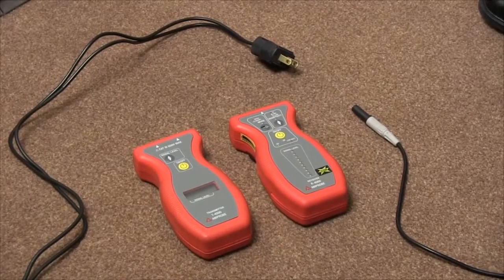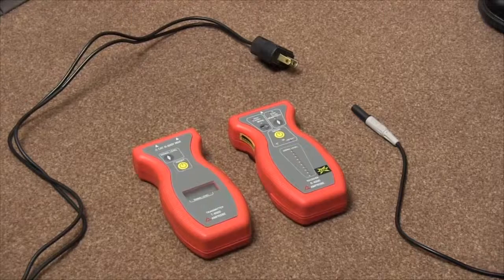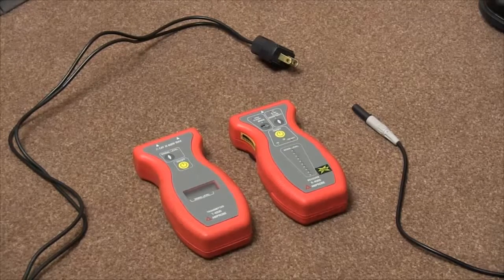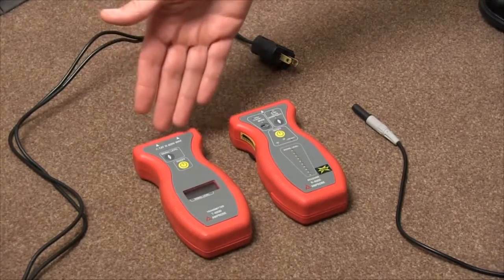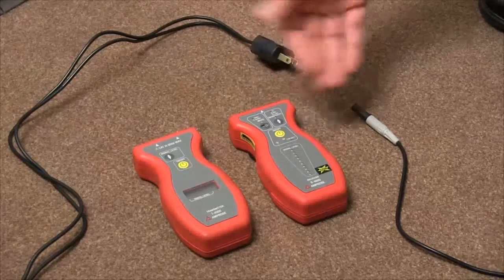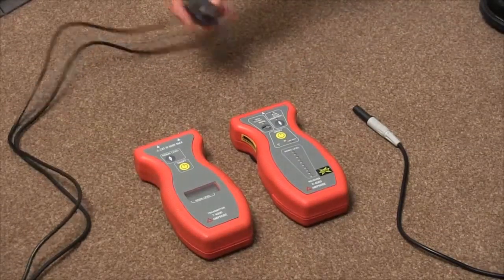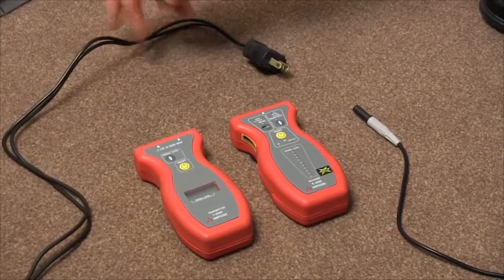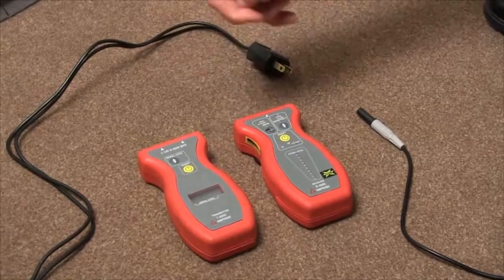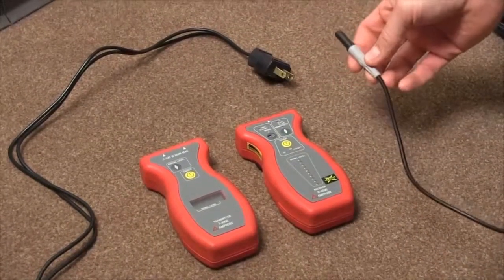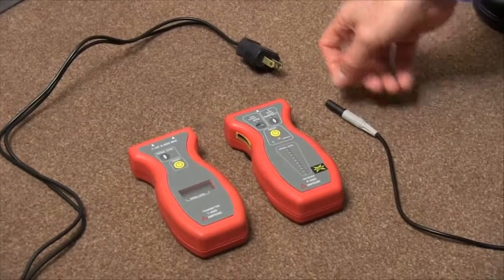Today we're talking about the Amprobe AT4000 wire tracer. This kit consists of a transmitter and a receiver as well as an accessory for the plug to input the electricity into the actual unit and also a plug that acts as a grounding unit.